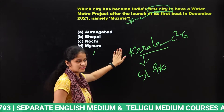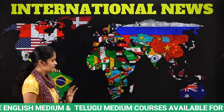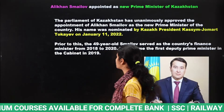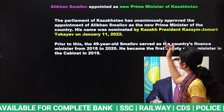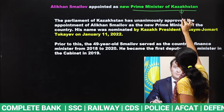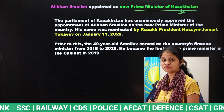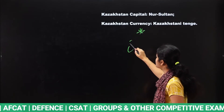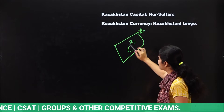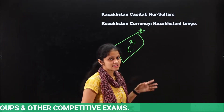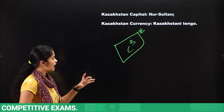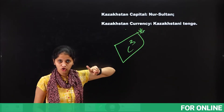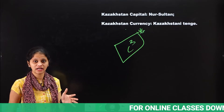With this we have completed our practice session. Now let us look into our international current affairs descriptive part. Recently a new Prime Minister has been appointed for Kazakhstan. First, let us discuss the C-cube — the static GK formula for countries: Country, Capital, and Currency. The country is Kazakhstan, the capital is Nur-Sultan, and the currency is Kazakhstani Tenge. This C-cube formula is what you have to follow when covering static GK of countries.